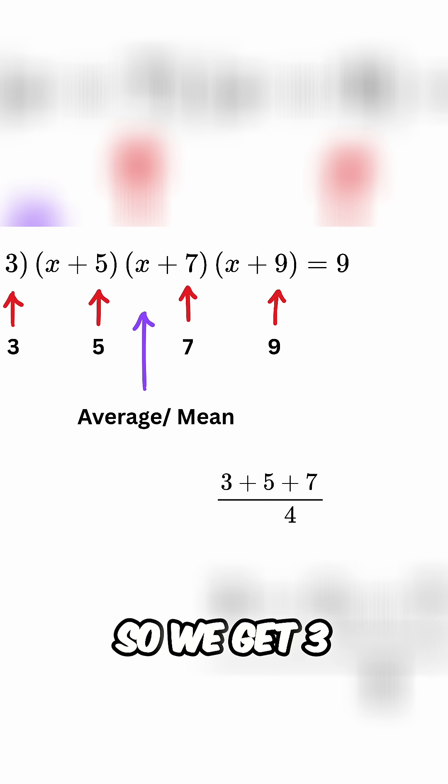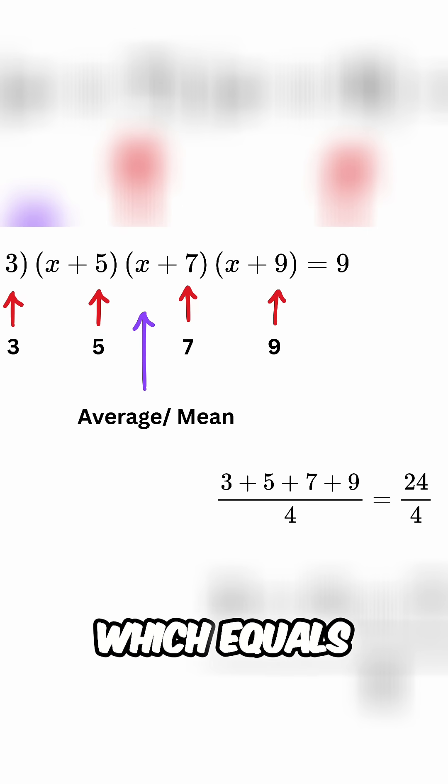So we get 3 plus 5 plus 7 plus 9 over 4 or 24 over 4 which equals 6.